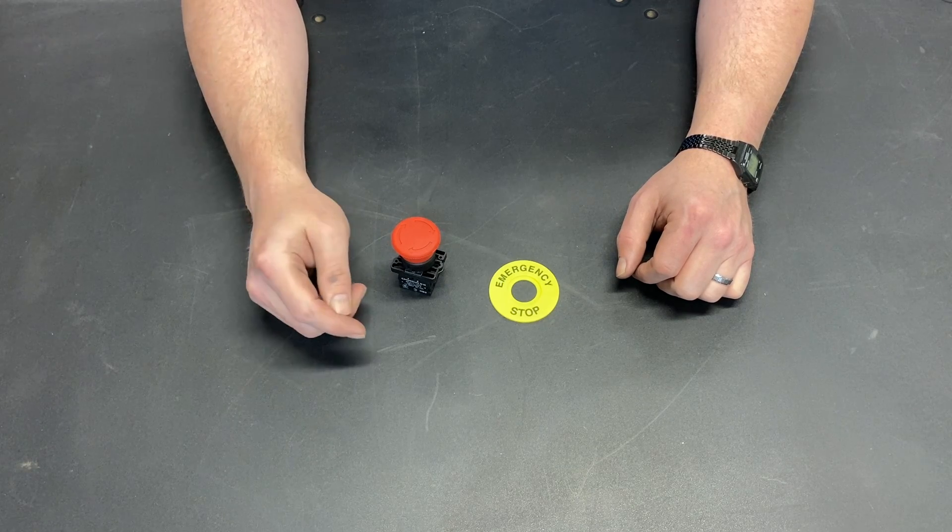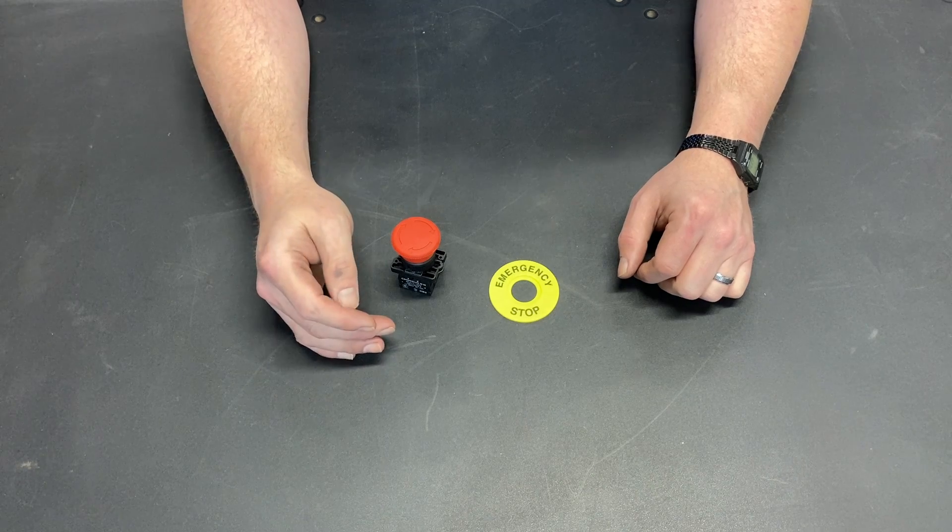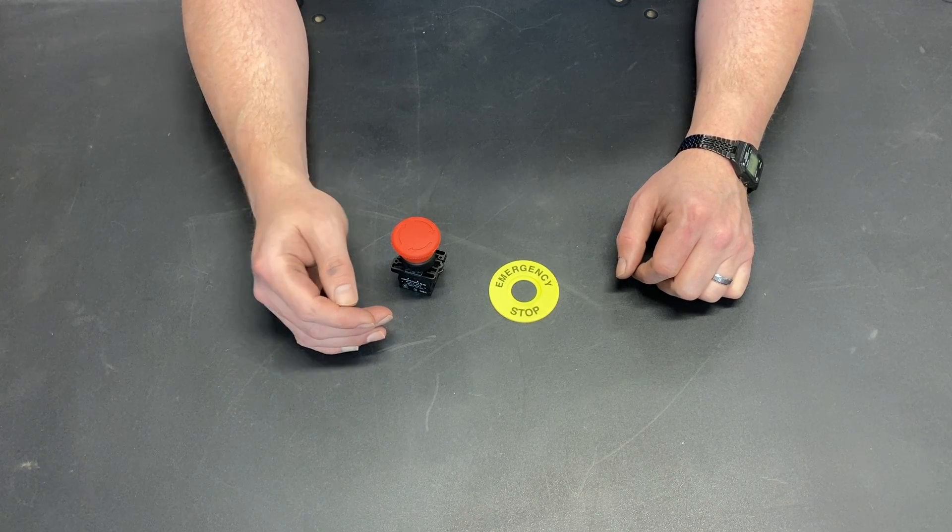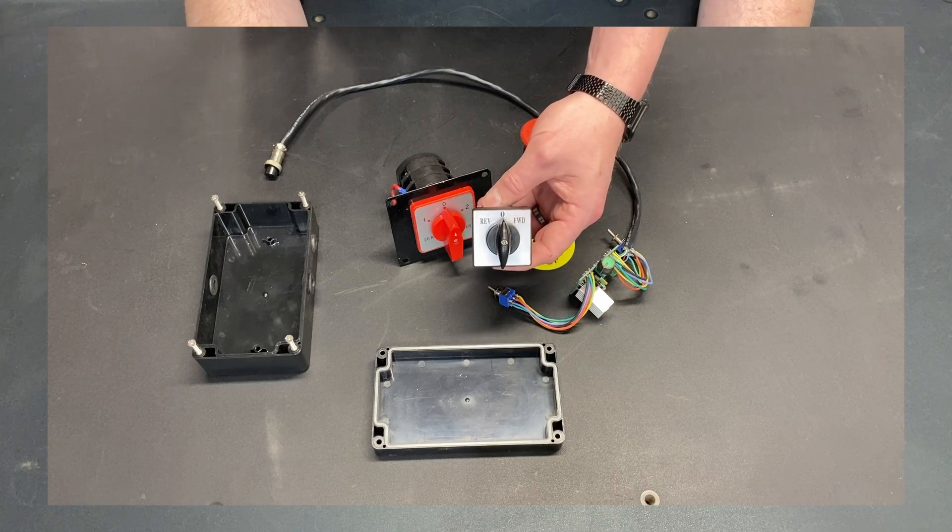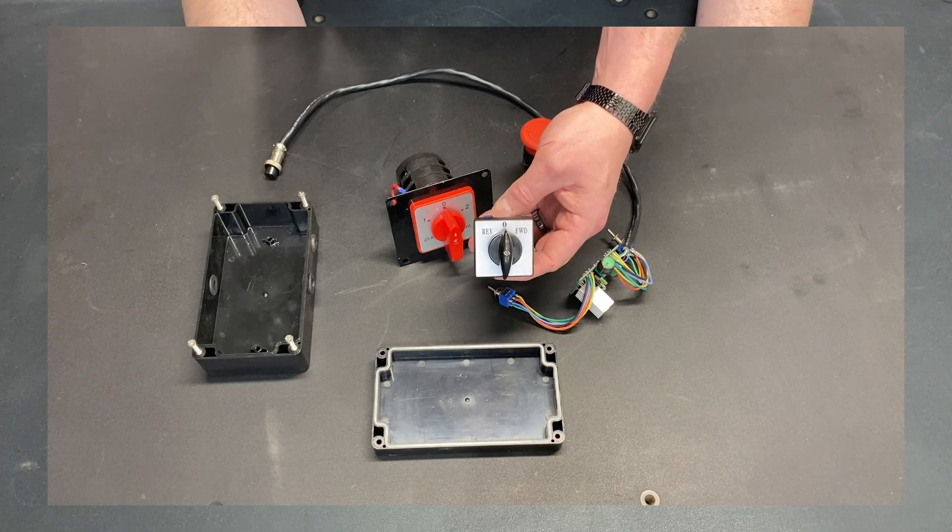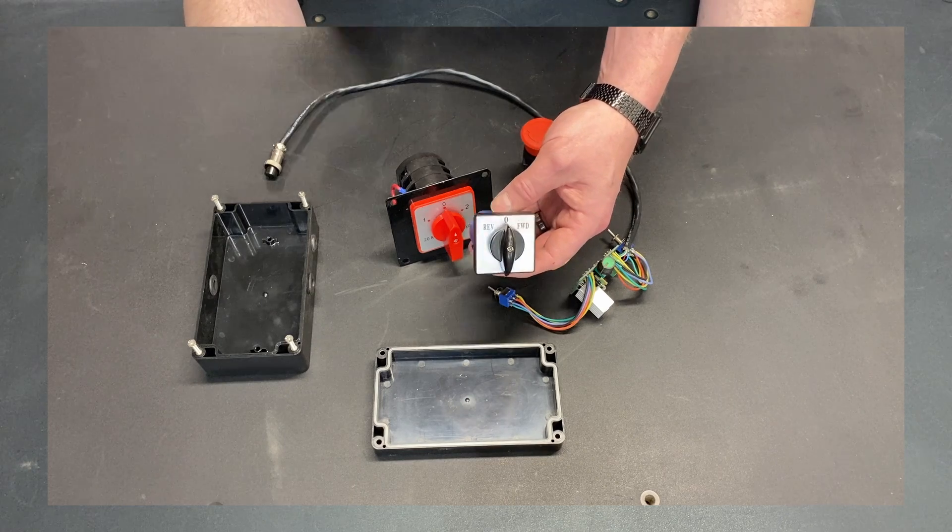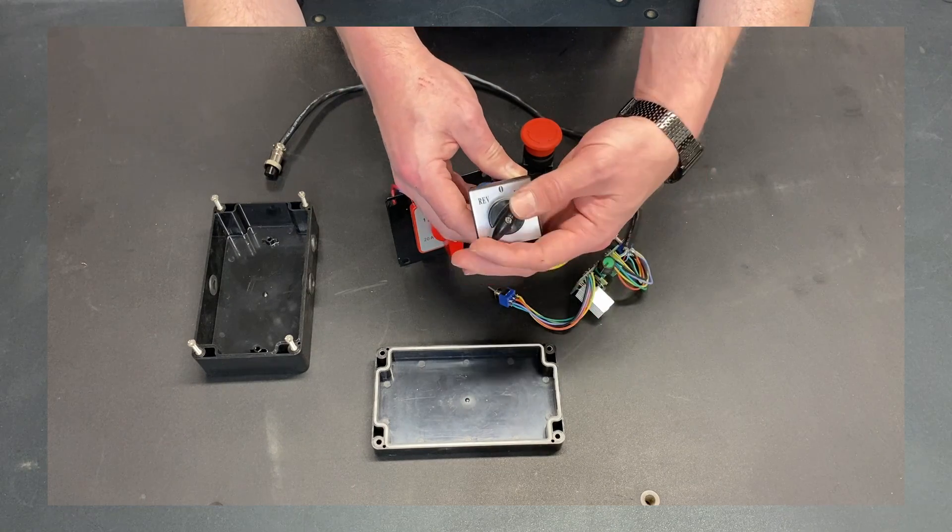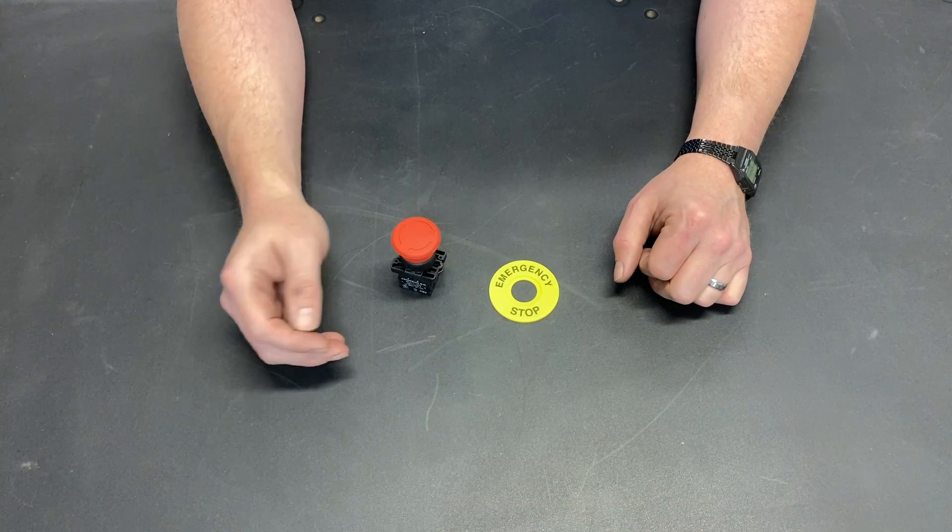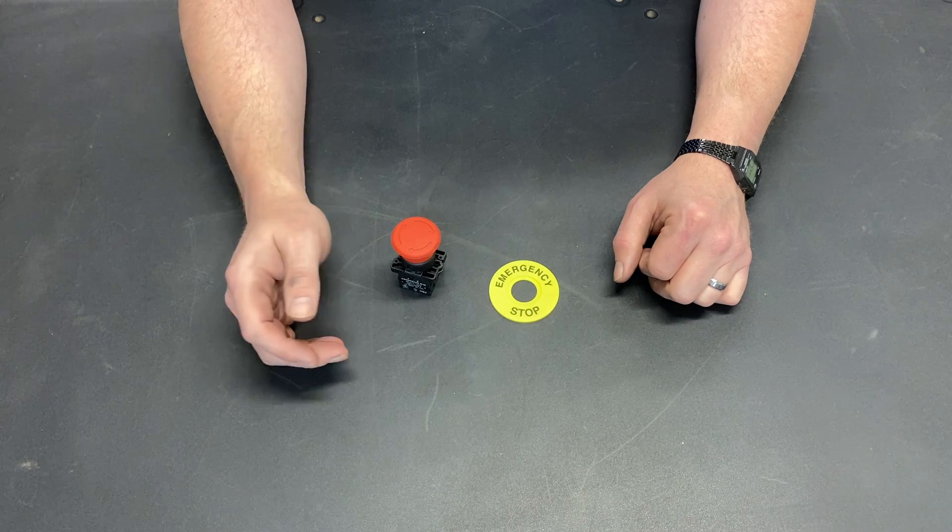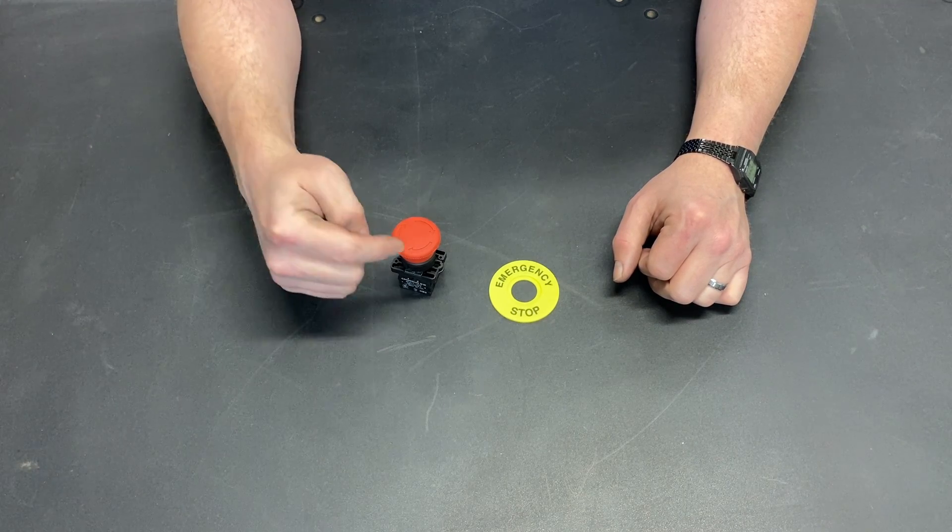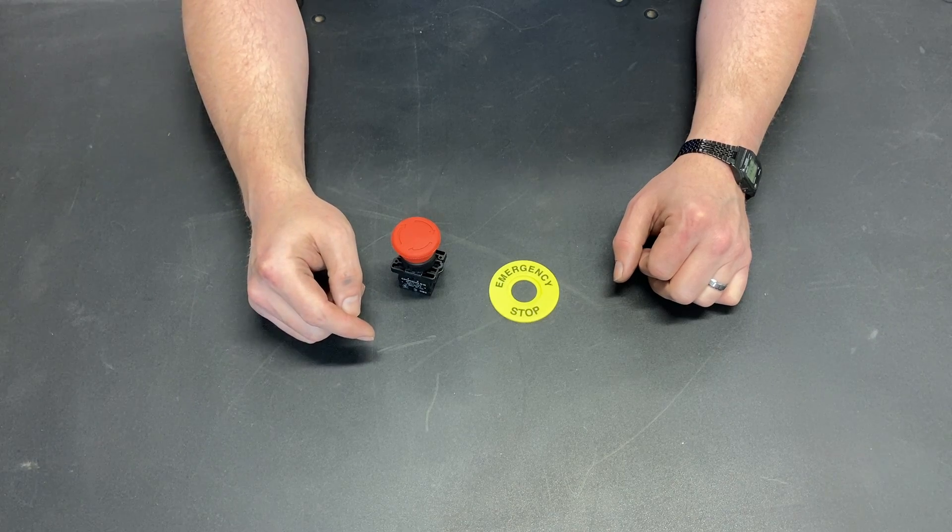My mill lathe combo came with a simple direction switch that also doubled as the power switch. There was no emergency stop, there was no master power, there was frankly no other switches. It was just forward, off, and reverse. That was the sum total of what my machine came with. I've done a lot of upgrades to that machine, I've added a lot of things, and I decided that an emergency stop switch would be a good idea.